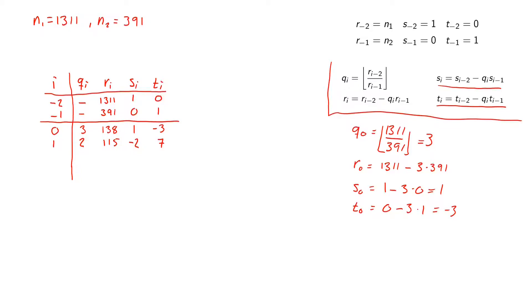For i equals 2 we will have q_2 which is 138 divided by 115, which is 1 with a remainder 23. And s_2 will be 1 minus 1 times minus 2, so this will be 3. And t_2 will be minus 3 minus 1 times 7, which will be minus 10.